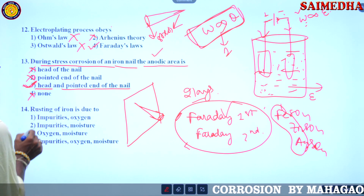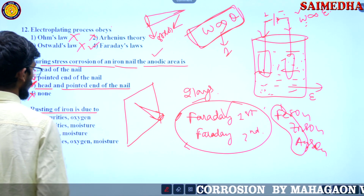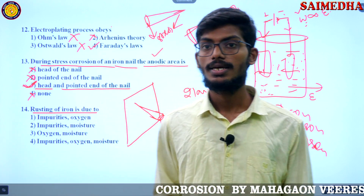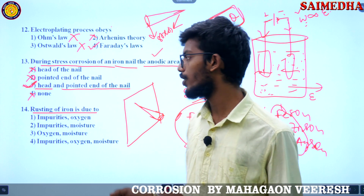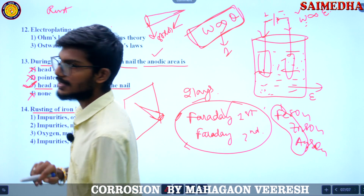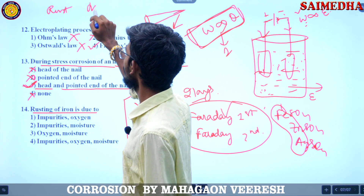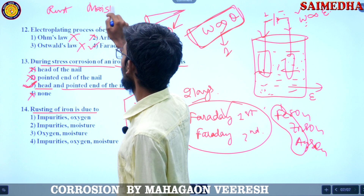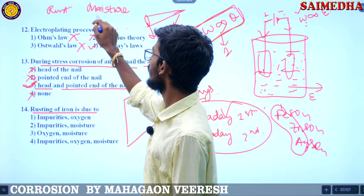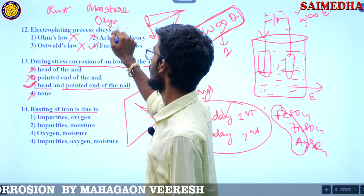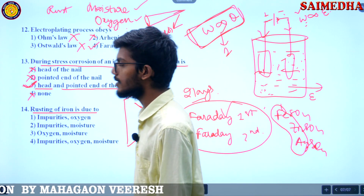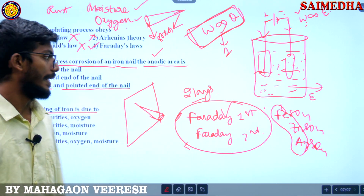Rusting of iron is due to what? For iron to get rusted, moisture is important. Along with moisture, oxygen is also important. Impurities alone or moisture alone are not the full answer.